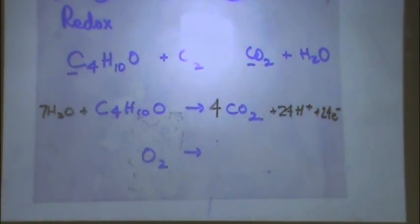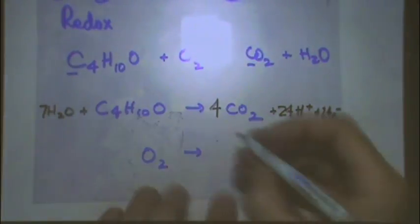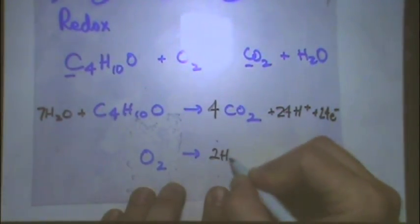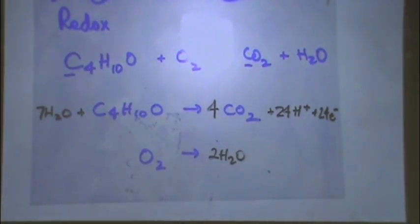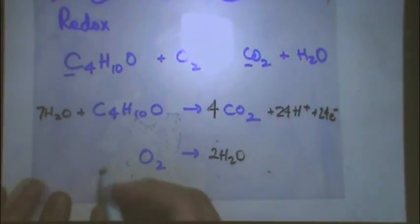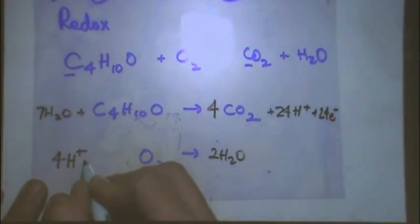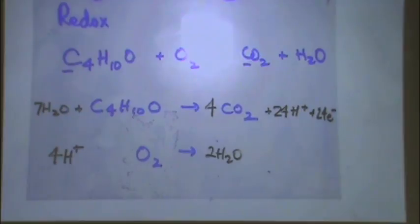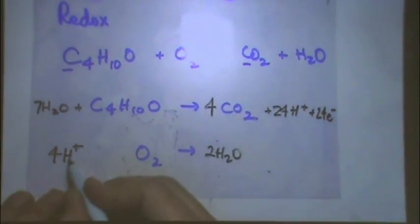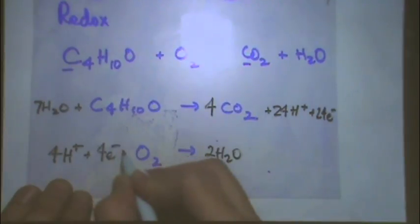Let's do the bottom one. Step one, balance whatever is not oxygen or hydrogen. There is none. It's just oxygen. Step two, balance oxygen with water. There's two on the left, magically is where it comes back. Two waters. Step three, balance the H's with H plus. So, four H plus on the left. Step four, adding electrons to the left side with the H plus. Four electrons.